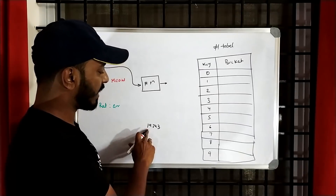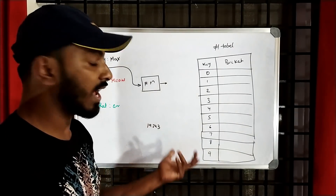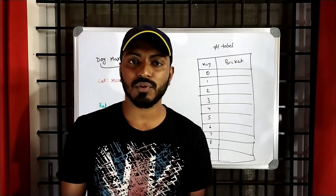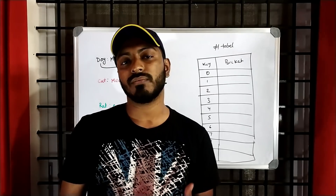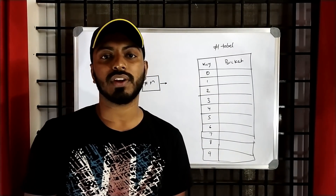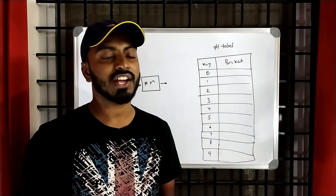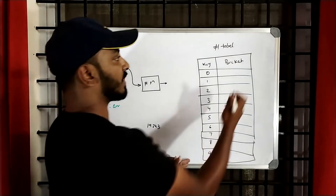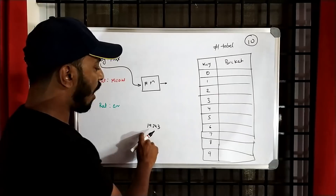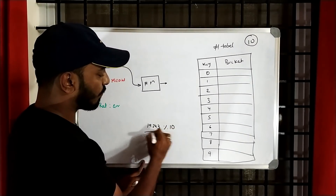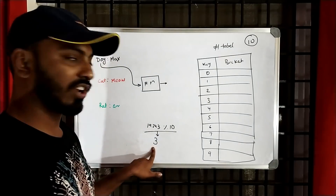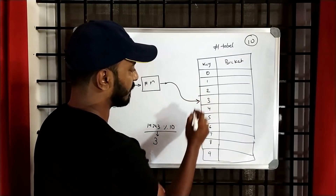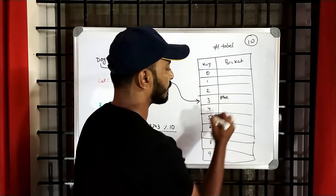Since we only have ten different locations available, we can't directly map the large hash number to the table. Our computers have finite memory, so instead we do a trick: we know the total number of rows is 10, so we apply a modulo operation on the hash value. For 19343 mod 10, we get 3. Now go to location 3 and save the value max there. That's it — it's that simple.